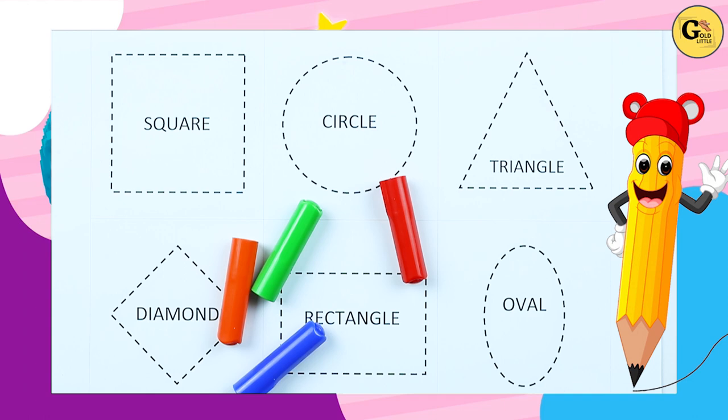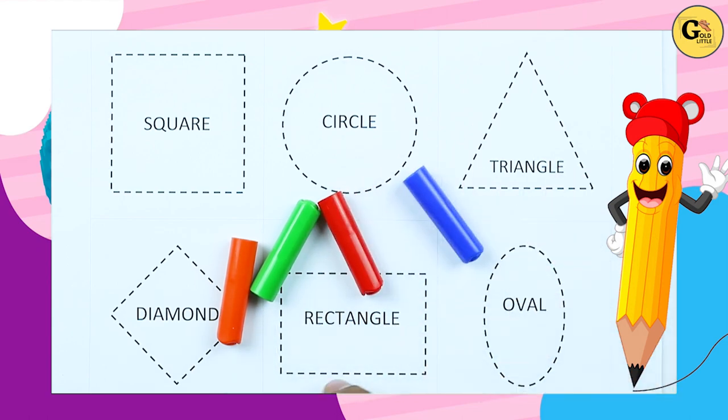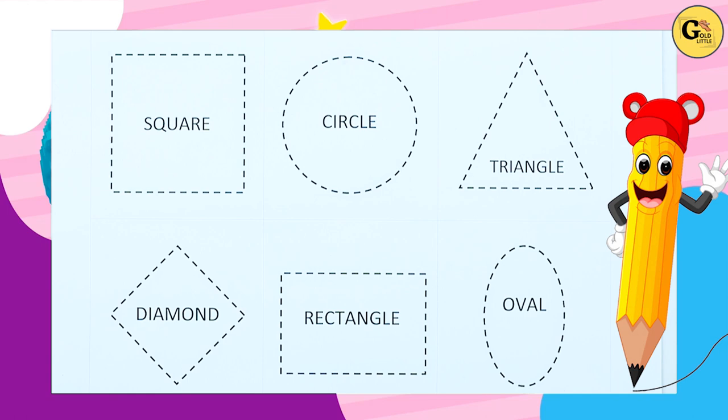Square, circle, triangle, diamond, rectangle, oval with colors: red color, blue color, orange color, green color. Let's start.